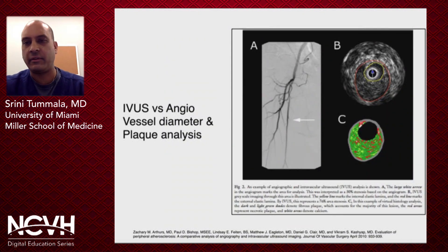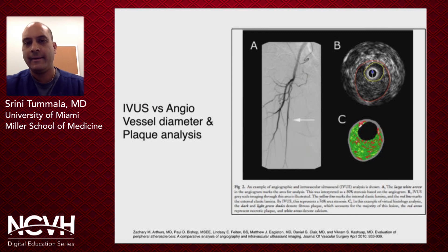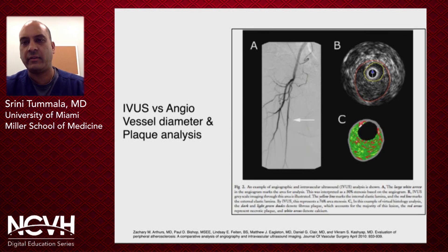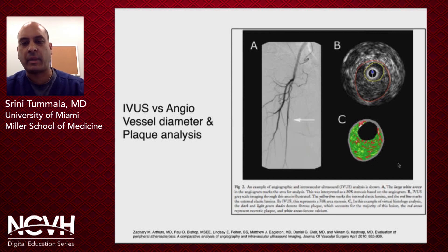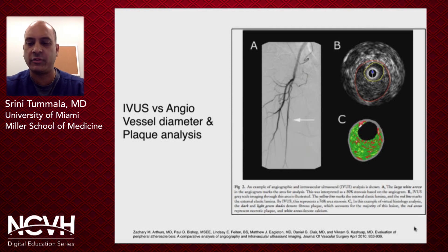Here's another example of IVUS versus angiography. The angiogram looks like there's really no focal hemodynamically significant stenosis, but when you look with IVUS, you can see not only significant fibrous plaque but also significant reduction of the lumen. A lot of this plaque is fibrous in nature with some areas of necrotic plaque and minimal calcification. It gives you much better visualization and analysis of what's really going on in a vessel you're trying to treat.